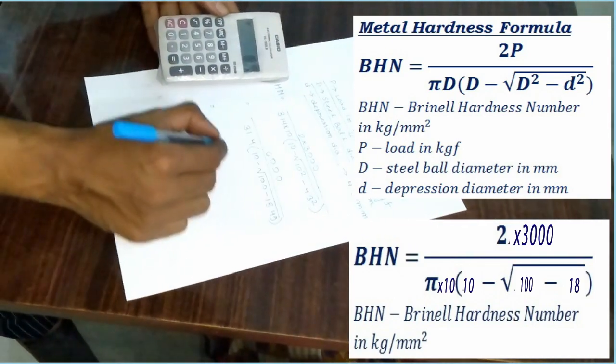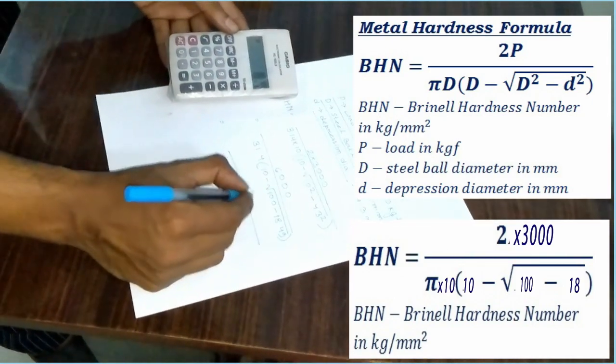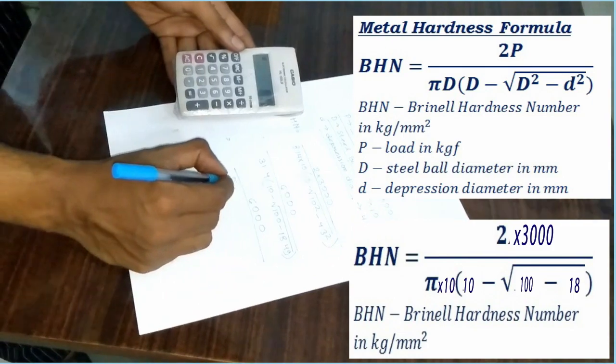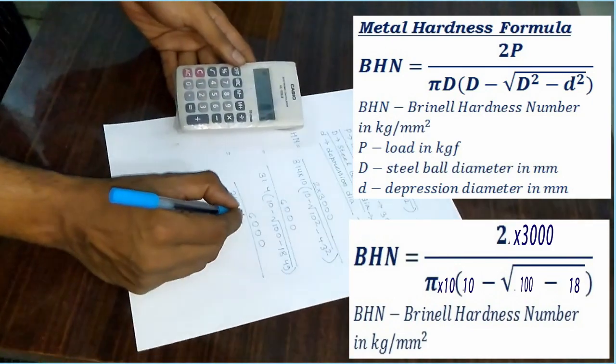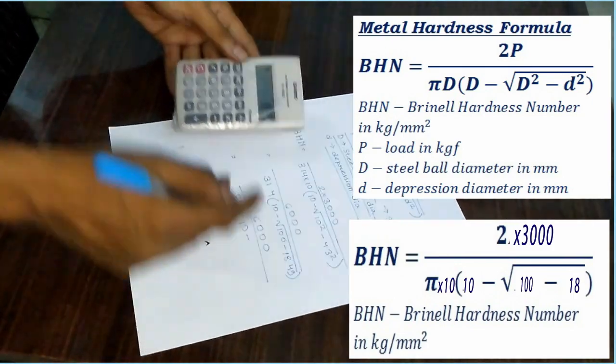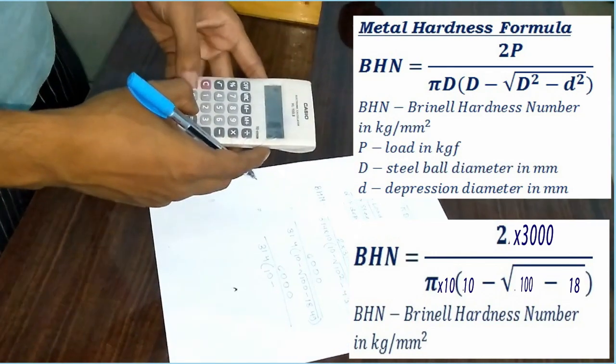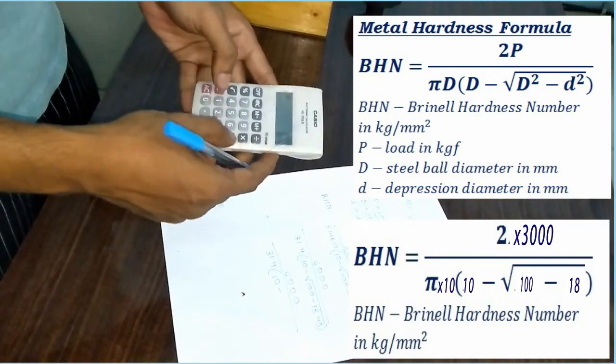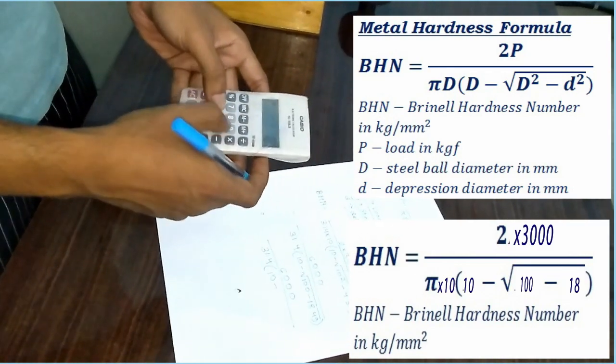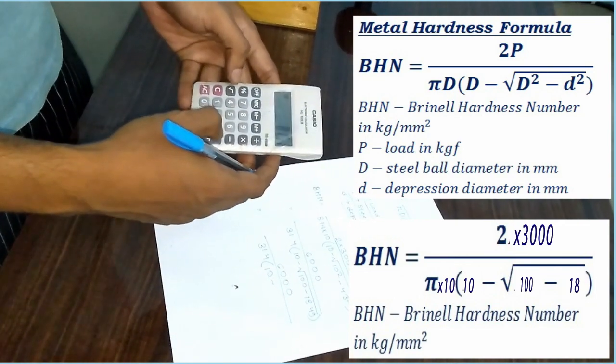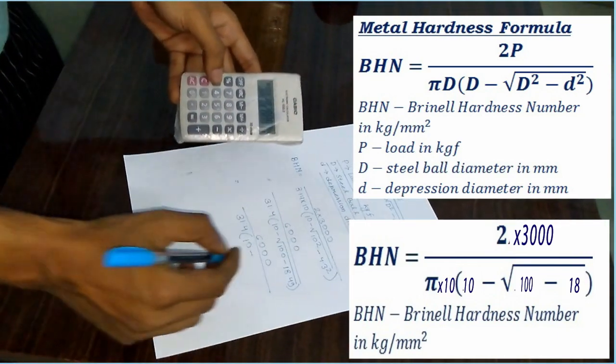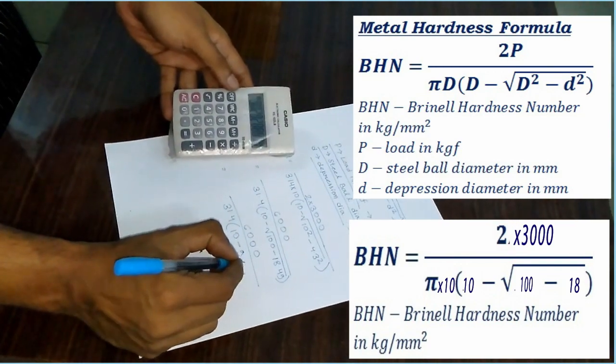So, next step 6031.4, 10 minus, if we subtract 100 minus 18.49, then it is 81.51. Root of 81.51 is 9.028.